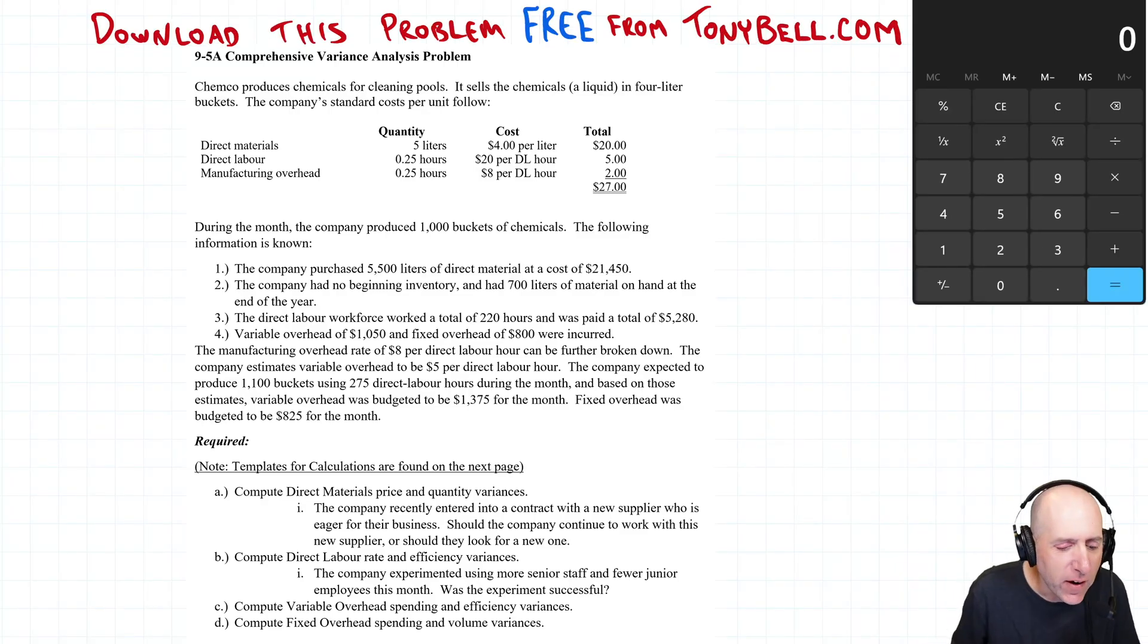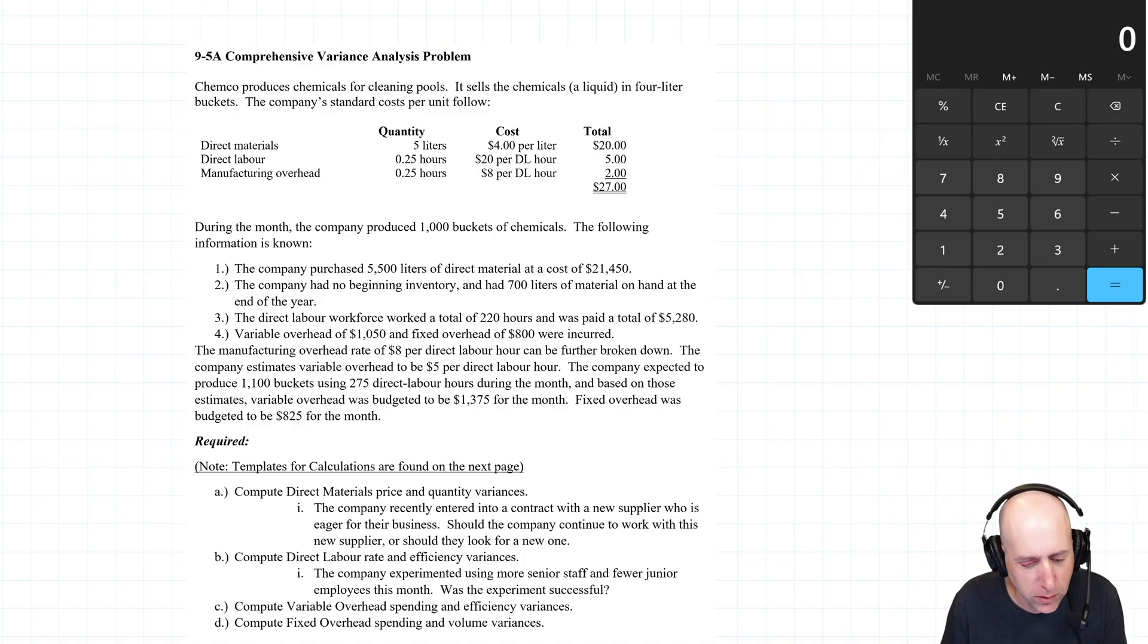Let's jump into Problem 95A, a comprehensive variance analysis problem that has us doing material, labor, variable overhead, and fixed overhead variances. So it's the kitchen sink problem, it's got a bit of everything. Chemco produces chemicals for cleaning pools. It sells the chemicals, a liquid, in 4-liter buckets.